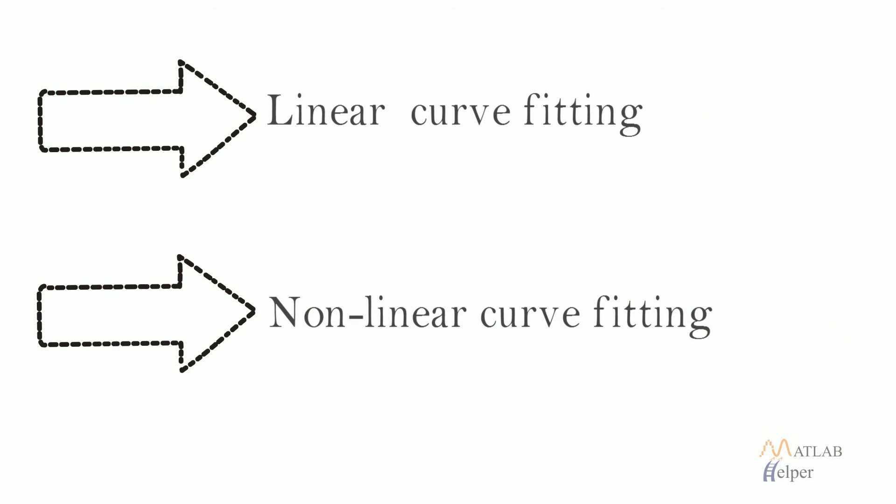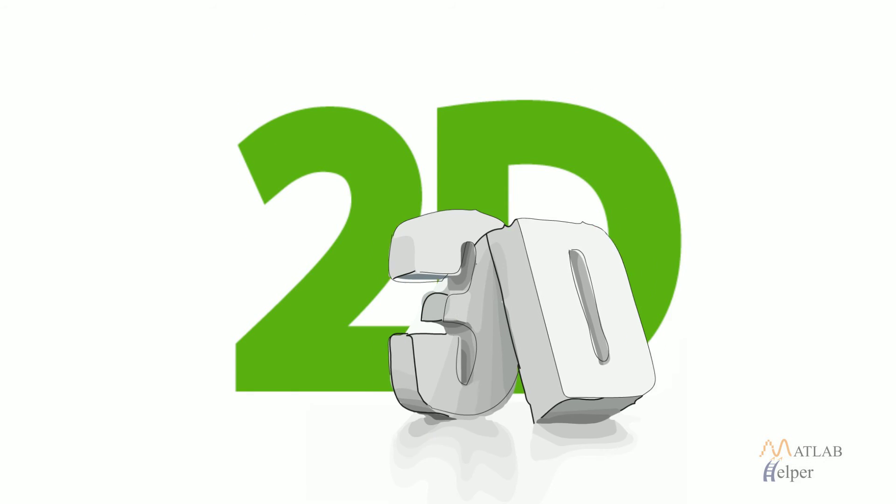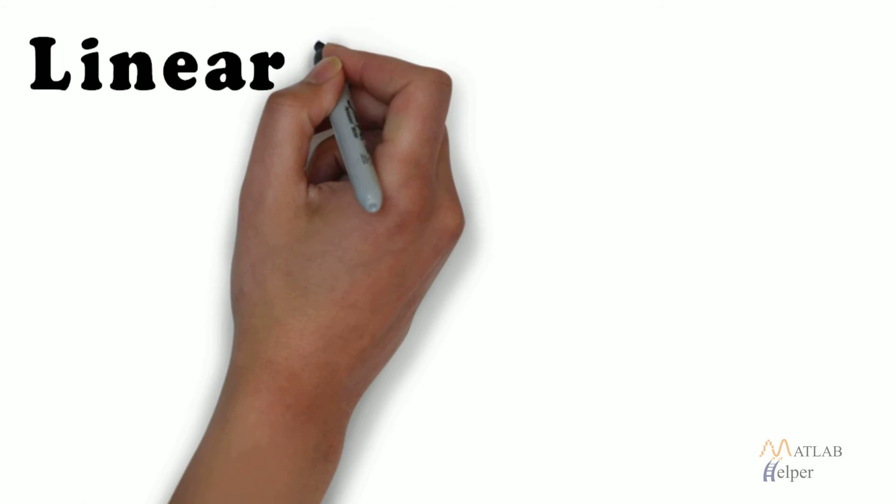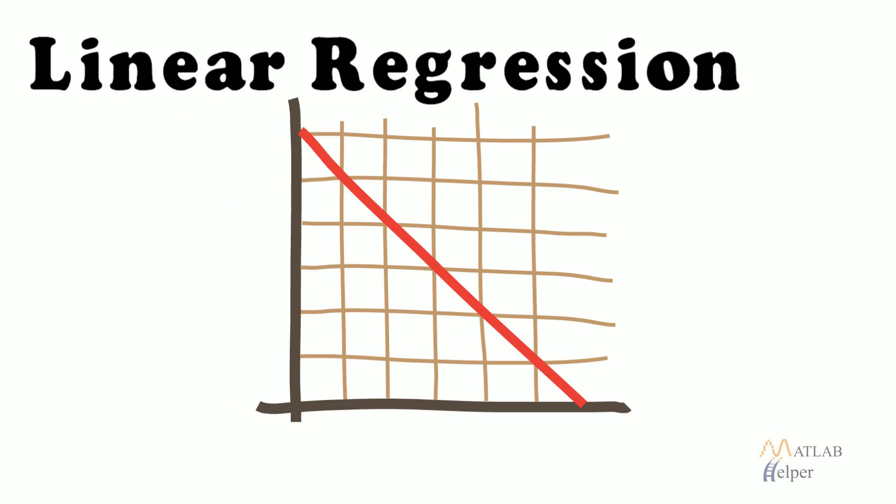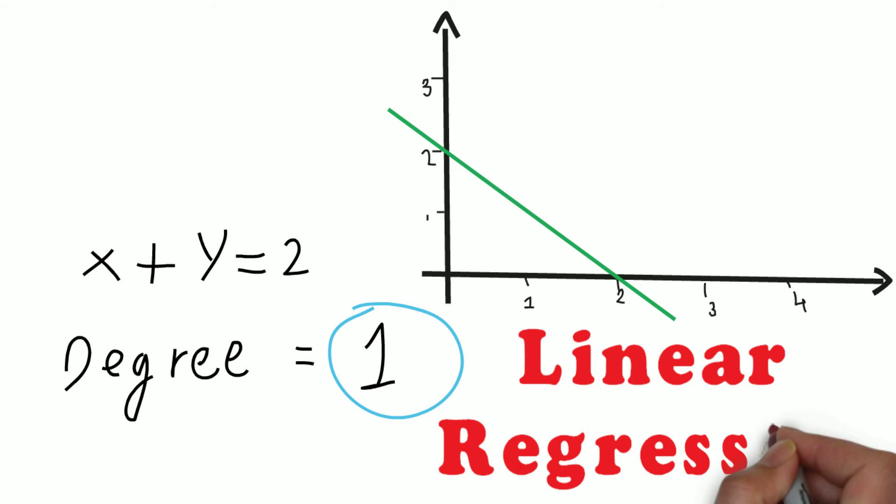In the following section we will discuss points in 2D and 3D. Linear regression: If the polynomial we want to fit is of degree 1, that is, it is a line, the process of curve fitting is known as linear regression.